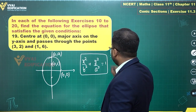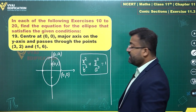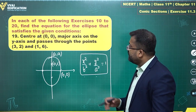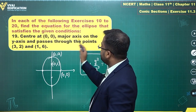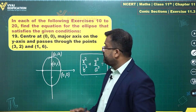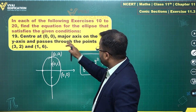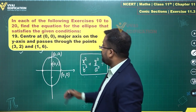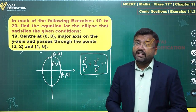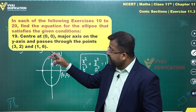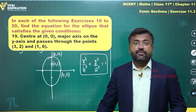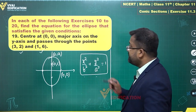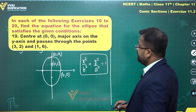The equation of the vertical ellipse will be x² upon b² plus y² upon a² equals 1. This will be the required equation form. We need the values of a and b. We cannot find them from the center and axis alone — it passes through the points 3 comma 2 and 1 comma 6, so we apply those two conditions.